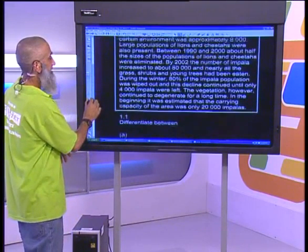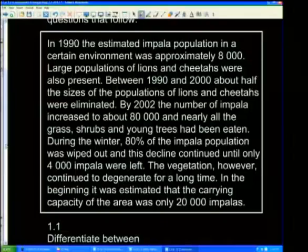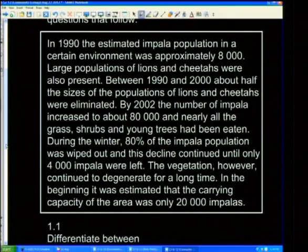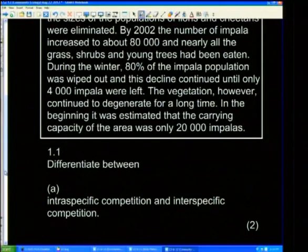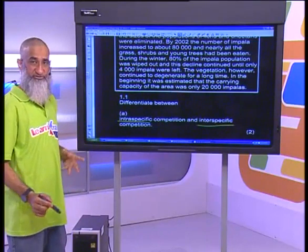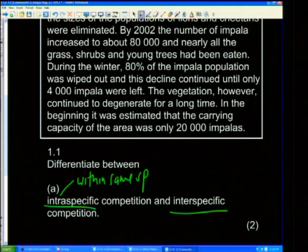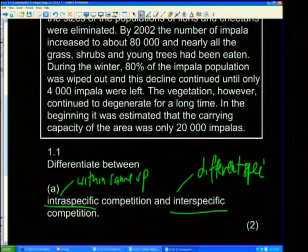There's a whole passage talking about an impala population — I'm not reading the whole passage, we're going straight to the questions. Remember, you should always read the passage first and then answer the questions. Differentiate between intraspecific and interspecific competition: intraspecific is competition between or within the same species, while interspecific is competition between different species.